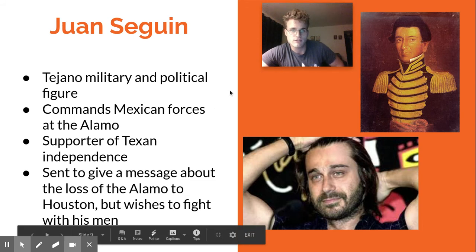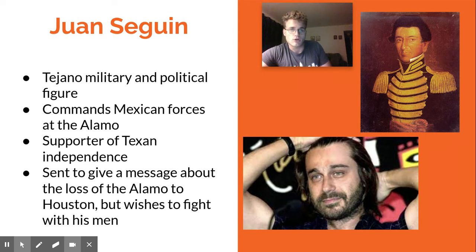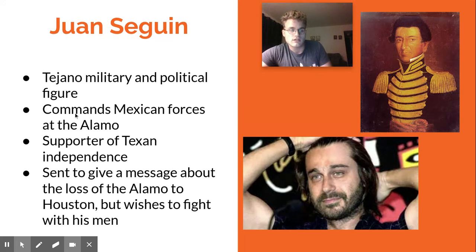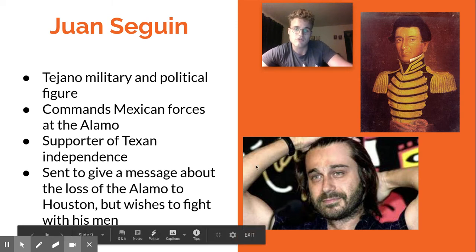Juan Seguin is a very important figure as the Tejano presence. Remember, there were different people involved in the Alamo conflict: you had Texians — white Americans, many of whom favored Texas becoming a slave state in the United States — but also Tejanos, who were native Mexicans who supported independence from Mexico even though they were Mexican themselves. In the film, Juan Seguin commands Mexican forces at the Alamo and is told to carry a message from Travis to General Sam Houston saying the Alamo has basically fallen to the forces of General Lopez de Santa Anna. You'll see Juan Seguin be very upset about that and not want to leave his men.